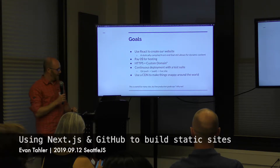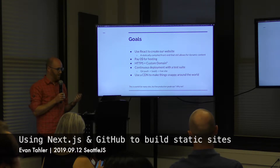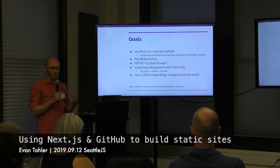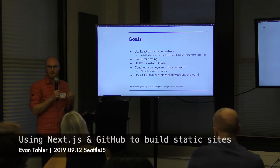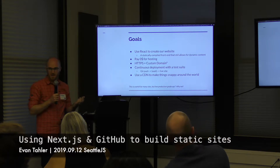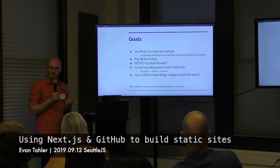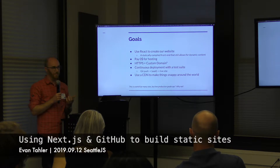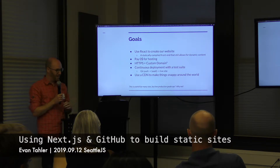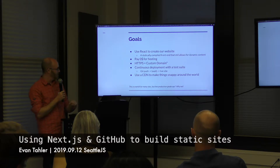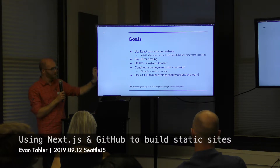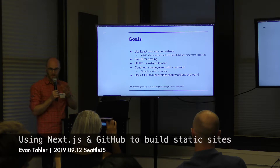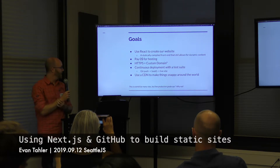So the goals: we want to use React to create our website. React is a great candidate because you end up with a collection of static assets, so you can host them very cheaply but still do dynamic stuff. The browser can do things through the API. I want to pay exactly zero dollars for my hosting. I want HTTPS, I want a custom domain name — footnote, you do have to pay for your domain name, about 12 bucks a year. I want continuous deployment.